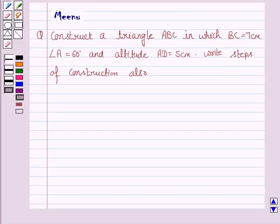Hello students, let's work out the following problem. Construct a triangle ABC in which BC is 7 cm, angle A is 60 degrees, altitude AD is 5 cm. Write the steps of construction also.